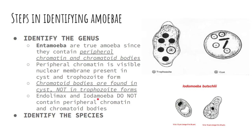Please take note that Endolimax and Iodamoeba do not contain either peripheral chromatin or chromatoid bodies. Once you identify the genus based on these characteristics, you can now identify the species. For example, Entamoeba is the genus and Histolytica is the species, identified by its characteristic morphology.